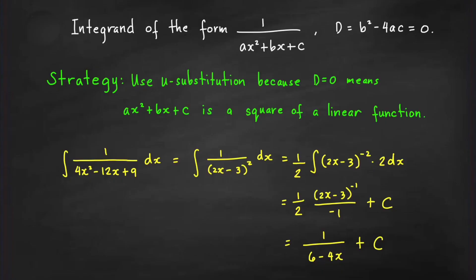Let us consider integrals with integrand of the form 1 over ax² + bx + c, where a is not equal to 0 and the capital D is the discriminant b² − 4ac. For this case, we have the discriminant equal to 0, which means the quadratic equation ax² + bx + c = 0 has a single real root. The strategy is to use u-substitution, because if the discriminant is 0, the quadratic expression is a perfect square of a linear function.